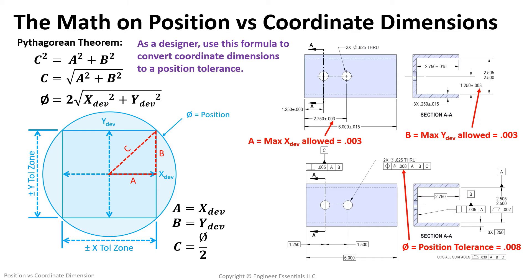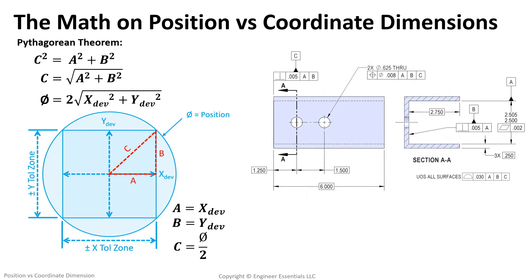Now, as you might have guessed, this formula can also be used to check parts. With the position symbol, our method of inspecting is the same as if we were inspecting coordinate dimensions. We measure the deviation in x and the deviation in y, and plug those values into the equation to get our actual diametric deviation.